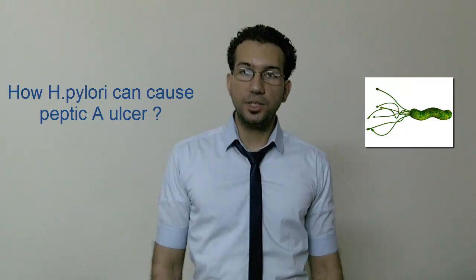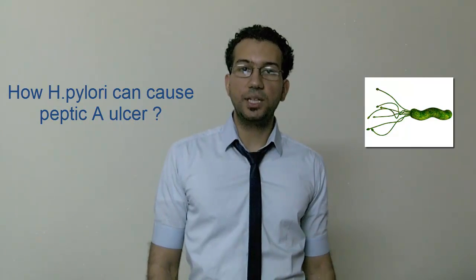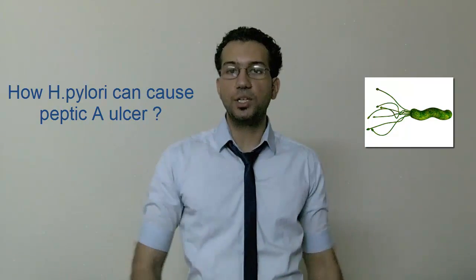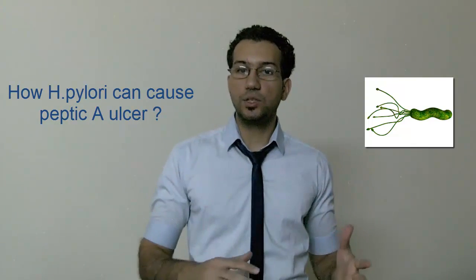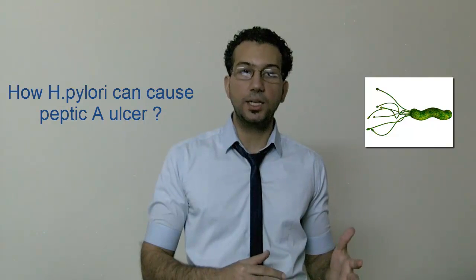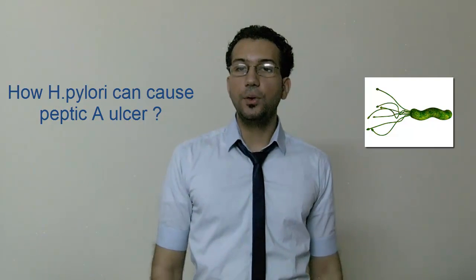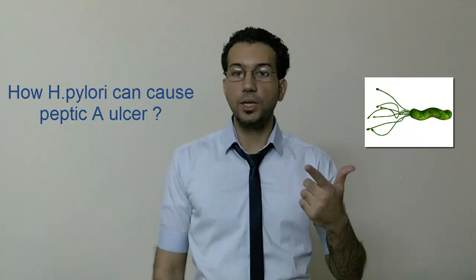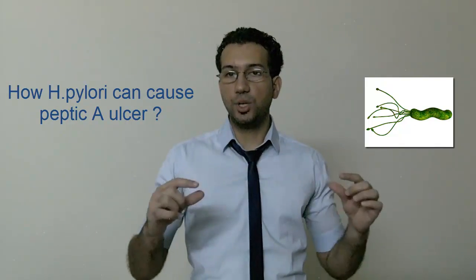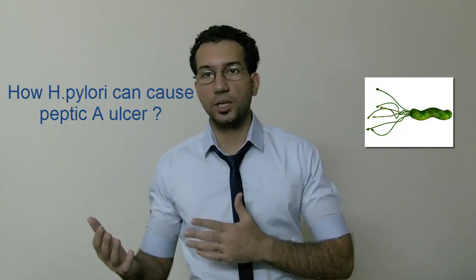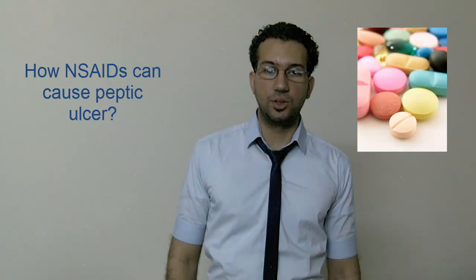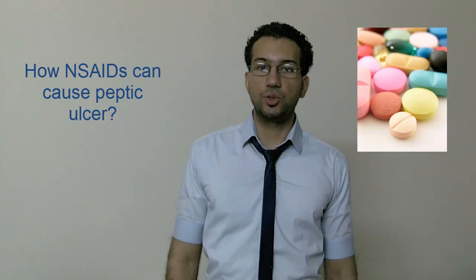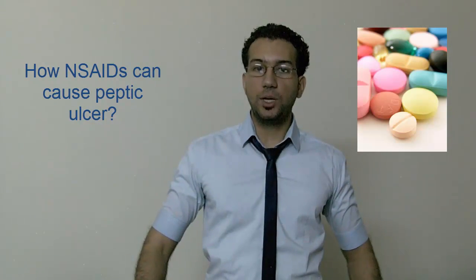How can H. pylori cause peptic ulcer? The bacterium causes peptic ulcer by damaging the mucus coating that protects the stomach and duodenum. Damage to this mucus coating allows the stomach acid to get through the sensitive lining beneath. Together, the stomach acid and H. pylori irritate the lining of the stomach or duodenum and can cause an ulcer.